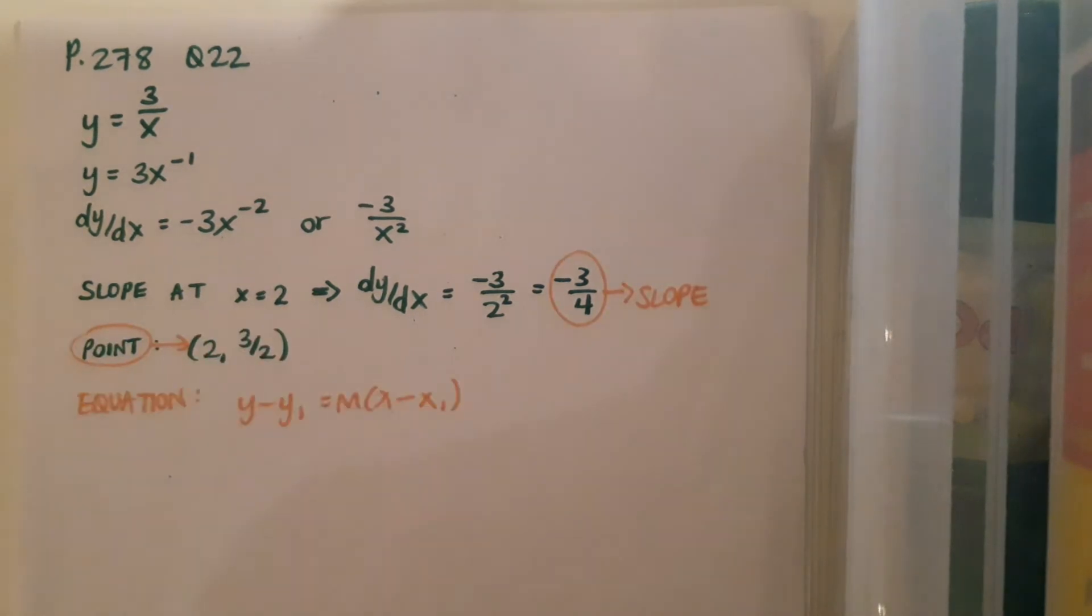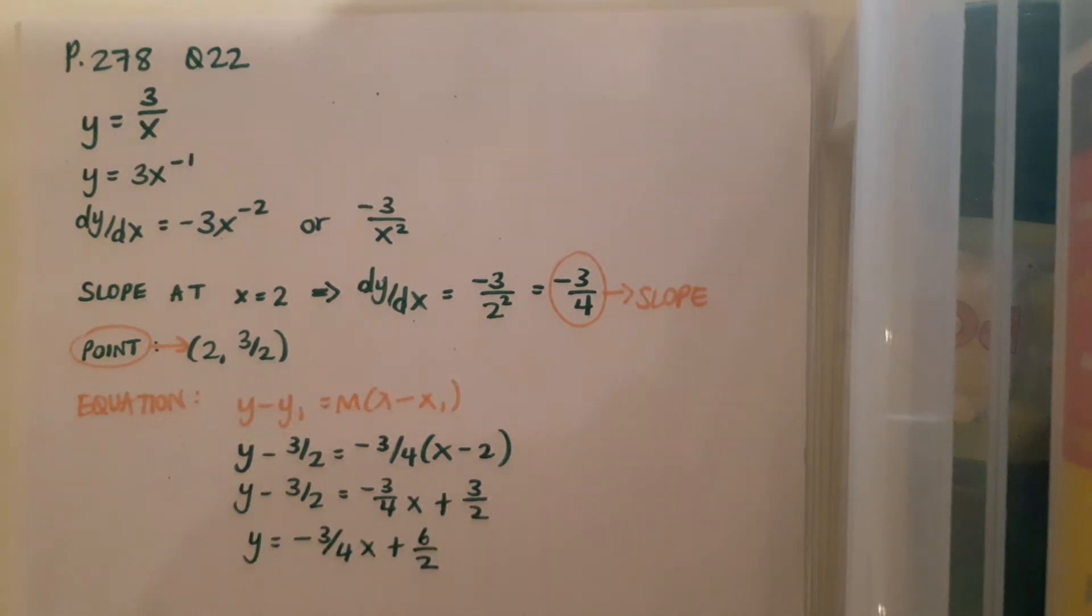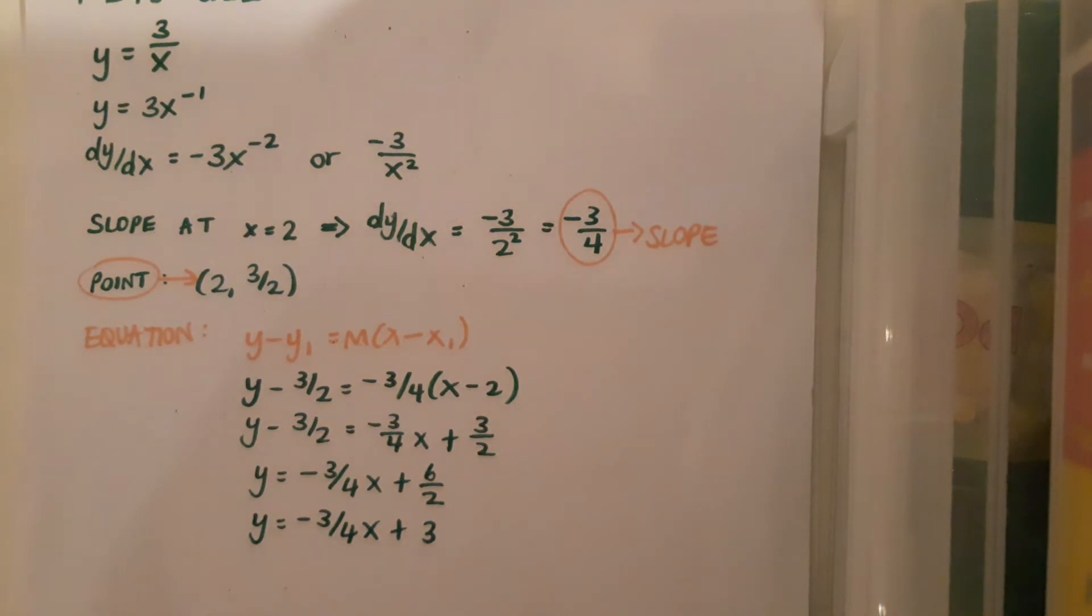So I have my slope, and I have my point, and now I can get my equation using my y minus y1 formula, and I can tidy this up and write it in the form y equals mx plus c, and I end up with y equals minus 3 over 4x plus 3.